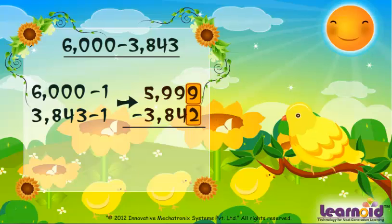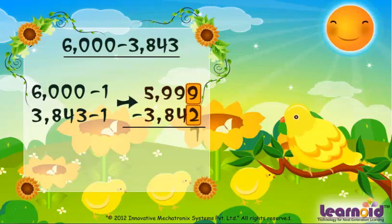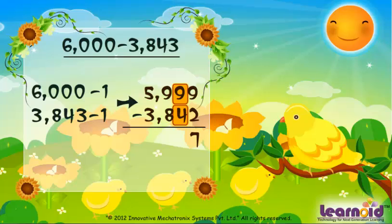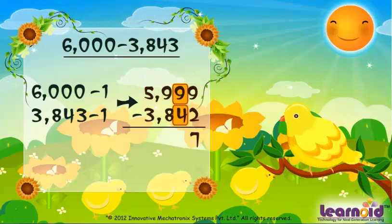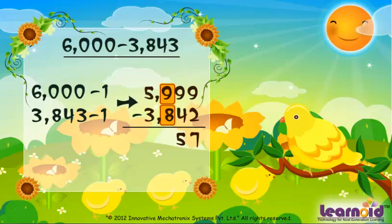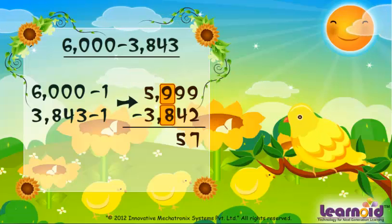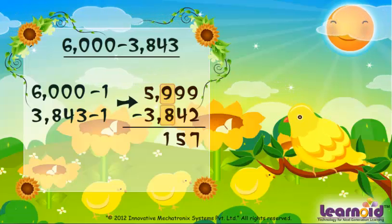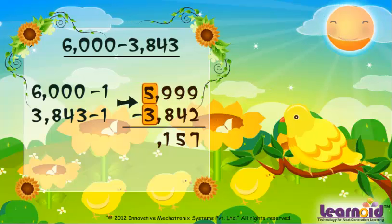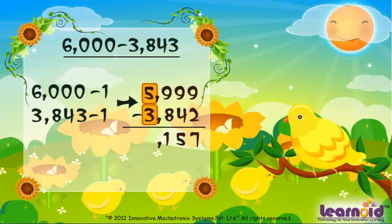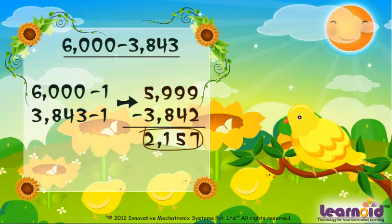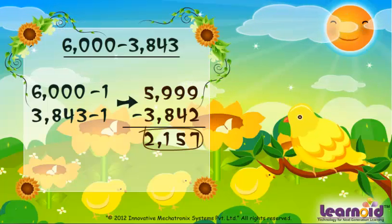9 minus 2 is 7. 9 minus 4 is 5. 9 minus 8 is 1. 5 minus 3 is 2. The answer is 2157.